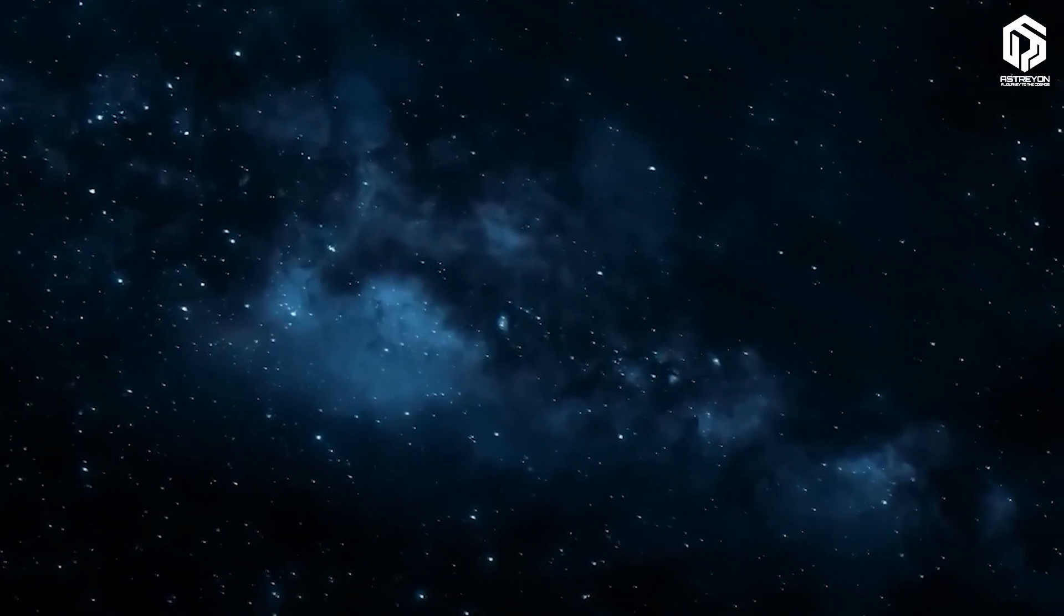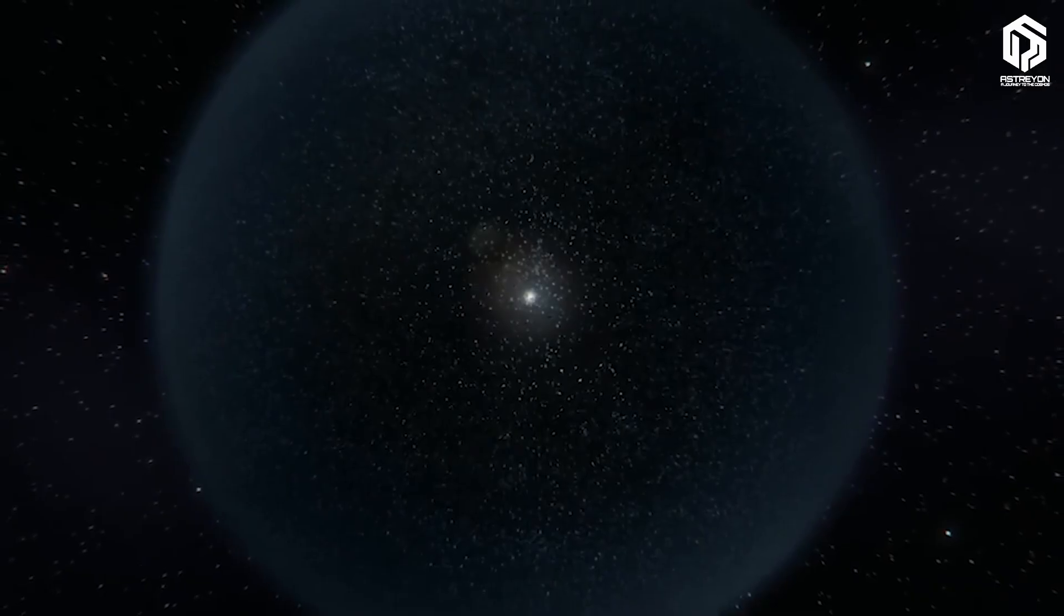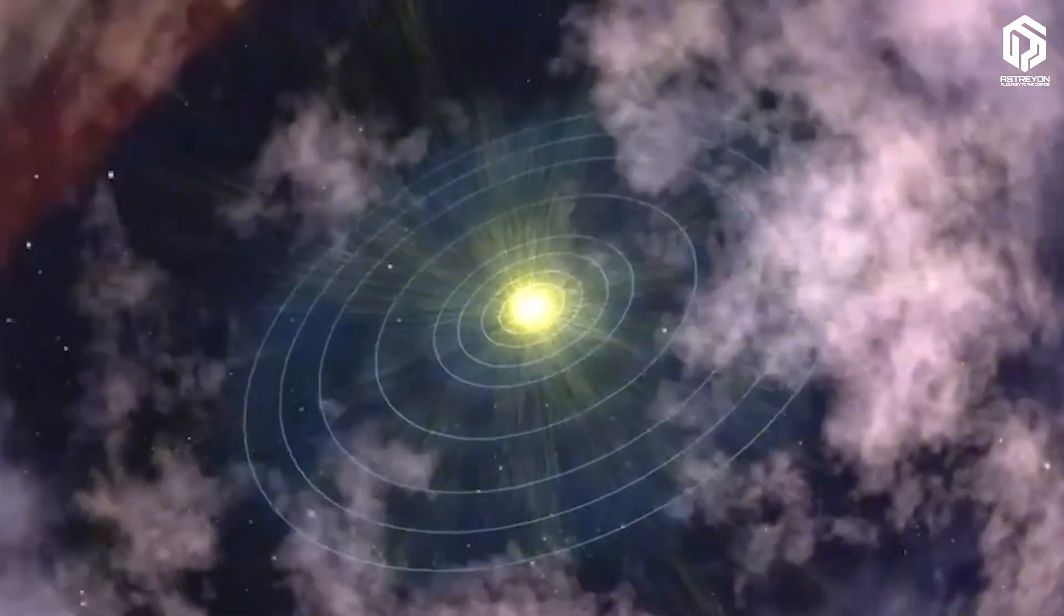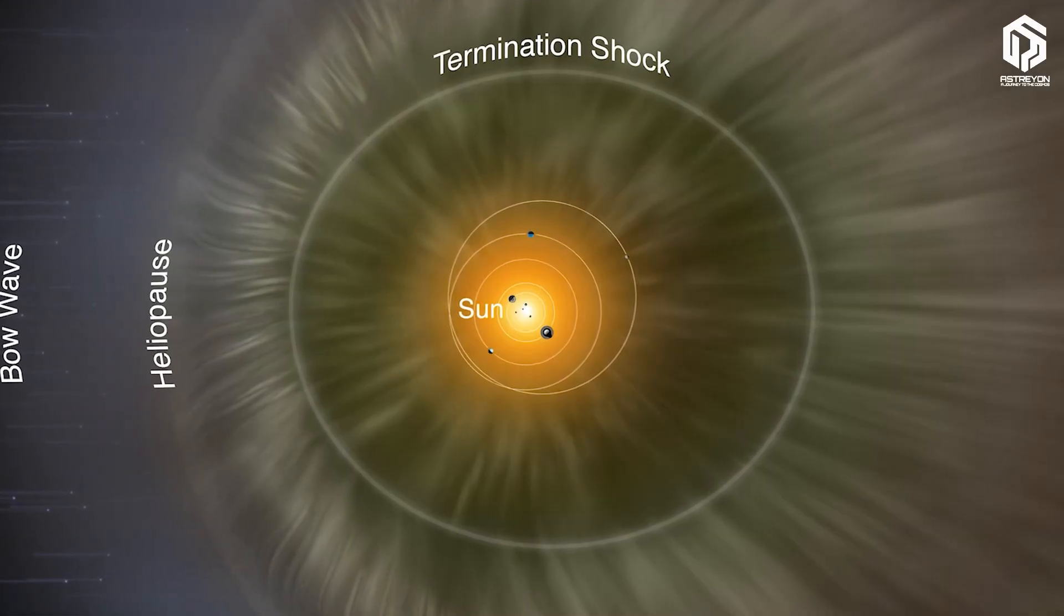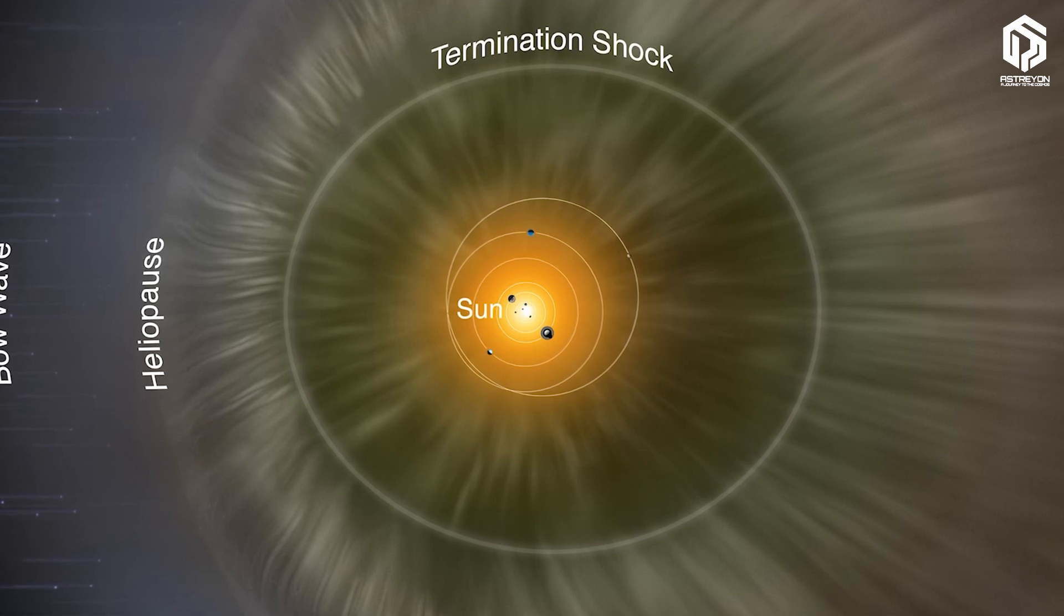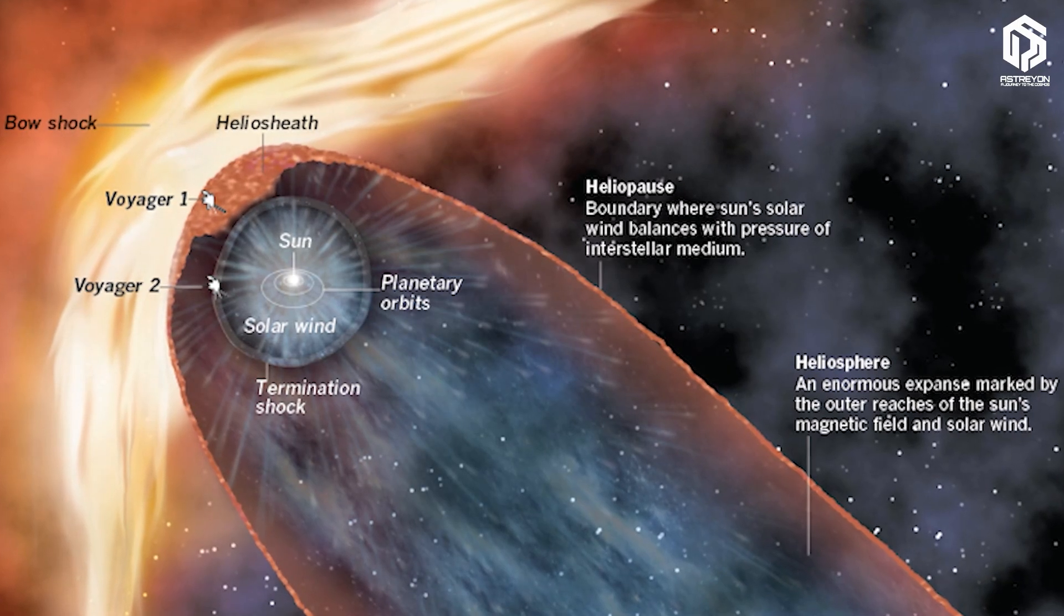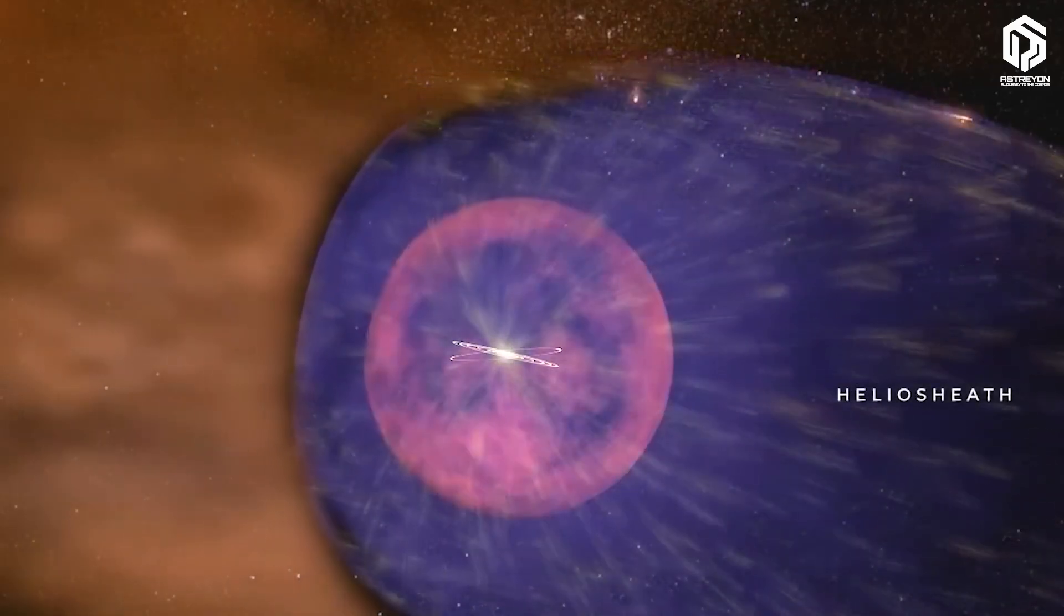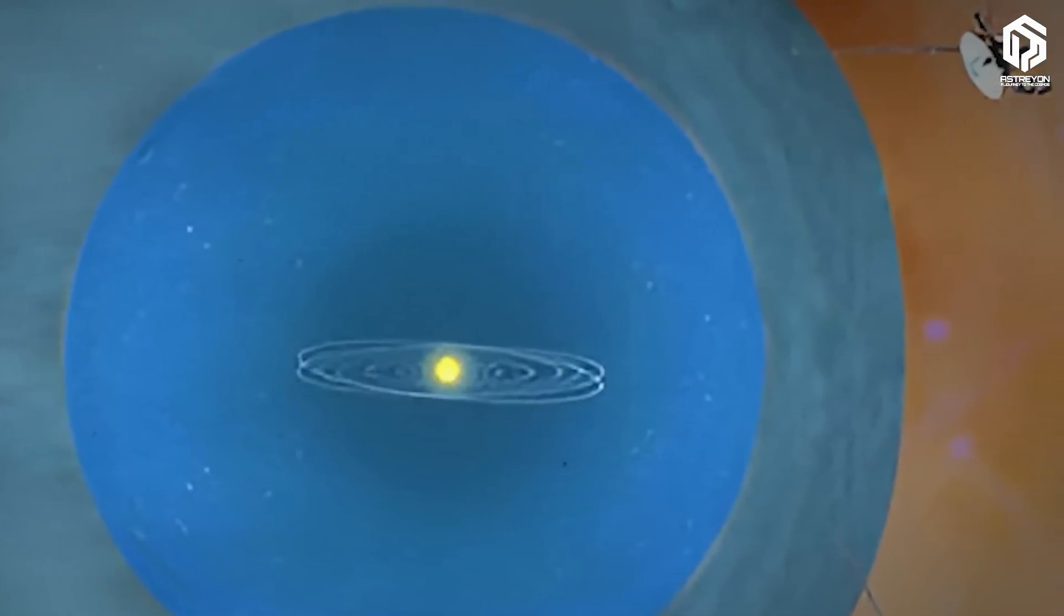Upon entering interstellar space in 2012, Voyager 1 crossed the heliopause, the boundary where the solar wind collides with cosmic winds and the heliosphere, the Sun's protective bubble, ends. This crossing was not like passing through a solid wall, but gradual. Scientists confirmed it by the decrease in solar particles and the increase in galactic cosmic rays. And from that moment on, strange discoveries began. Discoveries showing that interstellar space is not a calm void, but a dynamic environment full of wonders.